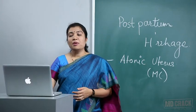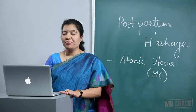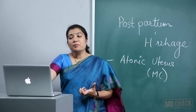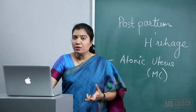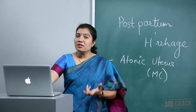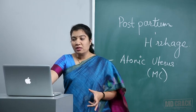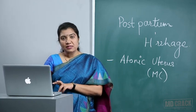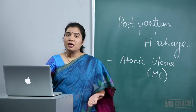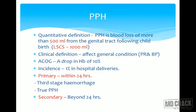Let's discuss postpartum haemorrhage. By quantitative definition, PPH is blood loss more than 500 ml during normal delivery or more than 1000 ml during caesarean section. The clinical definition states that PPH is when the general condition of the patient is affected due to blood loss, presenting as tachycardia or hypotension. According to the ACOG definition, a drop in Hb or PCV by 10 percent qualifies as PPH. The incidence is almost one percent in all hospital deliveries.